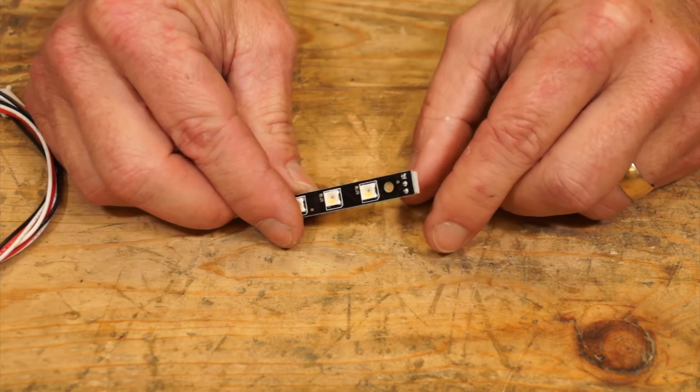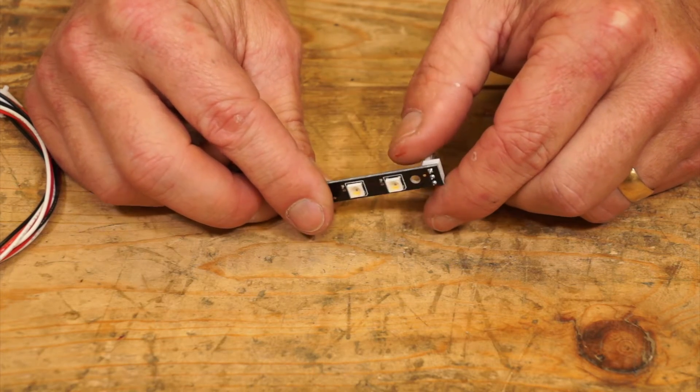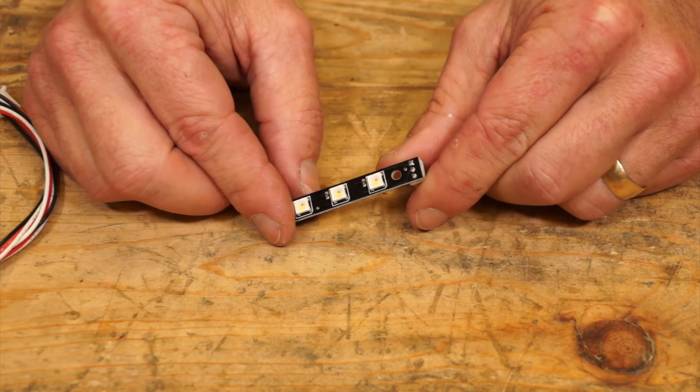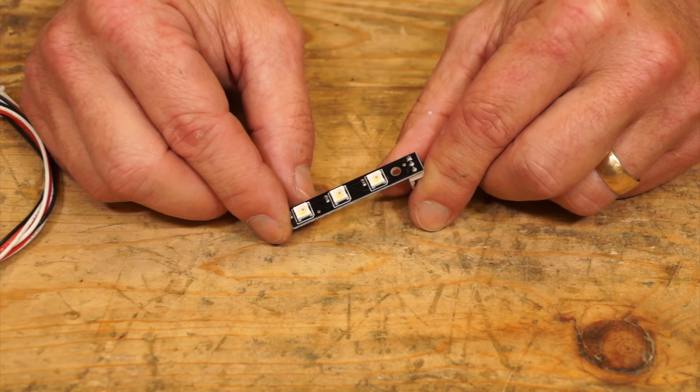It comes completely with a header on there because we figure you're going to use these in your printer for illumination. You could also use these for a project. They work just like other NeoPixels or RGBW LEDs.